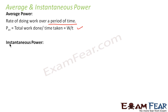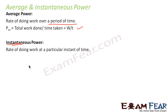What is instantaneous power? As the name suggests, it is the value of power at a particular instant of time — the rate of doing work at a particular instant. Average power means the rate of doing work over a period of time, say from T1 to T2. Average power is always calculated between two specific instants of time, whereas instantaneous power is the rate of doing work at a particular instant.